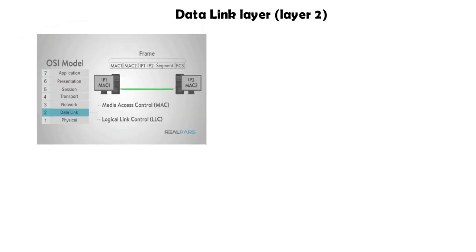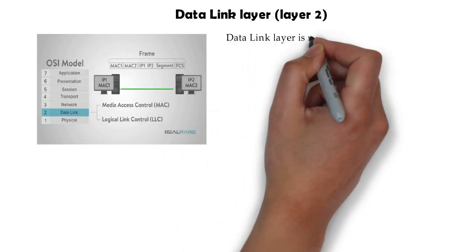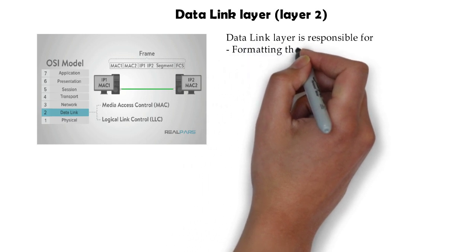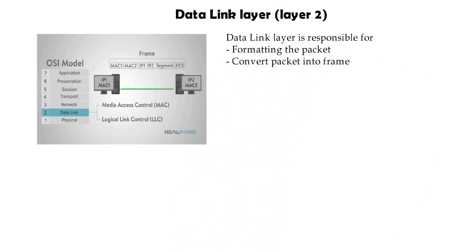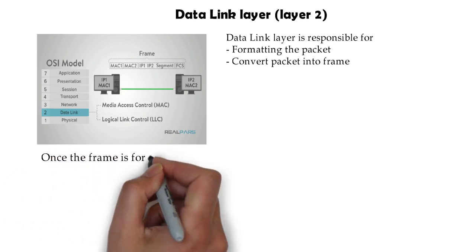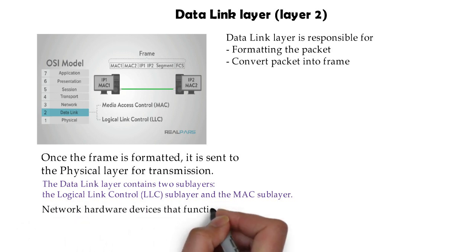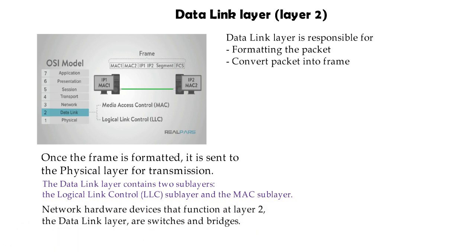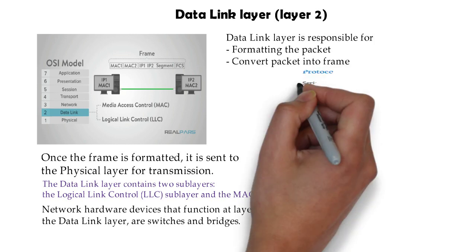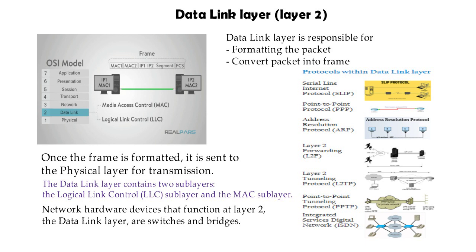Now layer 2, the data link layer. The data link layer is responsible for formatting the packet and converting it into a frame. Once the frame is formatted, it is sent to the physical layer for transmission. The data link layer contains two sub-layers: Logical Link Control (LLC) and MAC. Some protocols are PPP, SLIP, ARP, L2F, and ISDN.